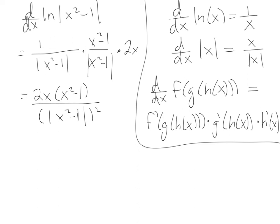Now the thing is, when you square something it turns positive. So at this point the absolute value is redundant, and we can drop it. So what we've got is 2x times x squared minus 1 over x squared minus 1 squared.